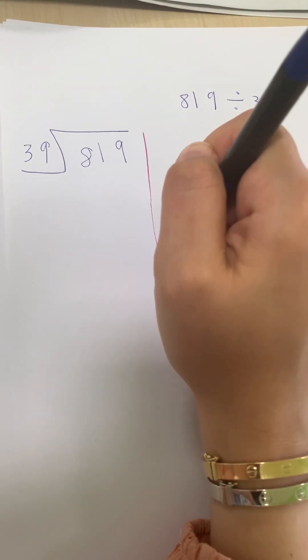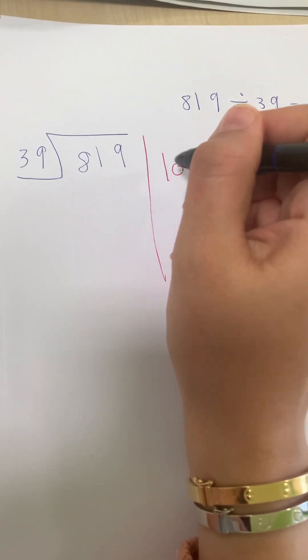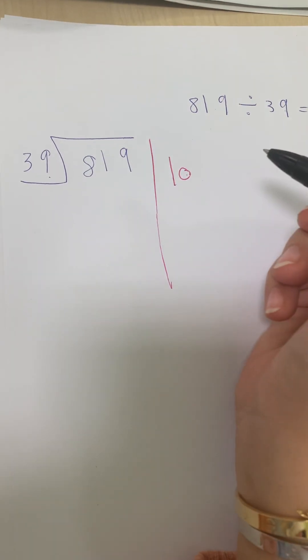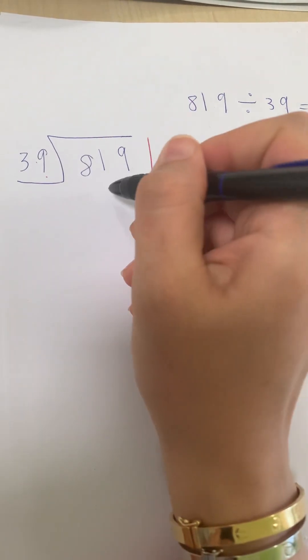Let's say 10. I will put 10 here. 10 times 39 is what? Zero will go here down. 1 times 39 is 39.